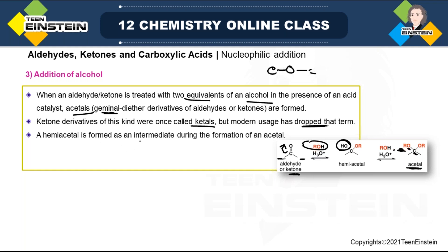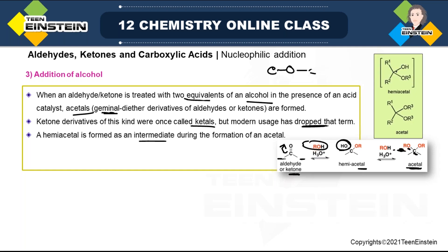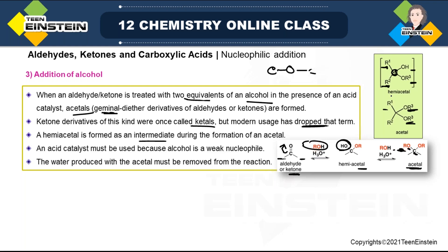Hemiacetal is formed as an intermediate — that is, after addition of the first equivalent of alcohol during acetal formation, but it is not the final product. The general structure of hemiacetal is: carbon attached to two groups (aromatic or alkyl), one OH, and one OR group. In acetal there are two OR groups because it is a geminal diether. Acid catalyst is very important here, because ROH is a very weak nucleophile — only in the presence of catalyst can it act as a strong nucleophile.